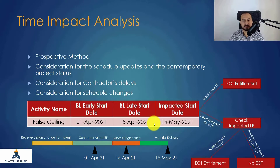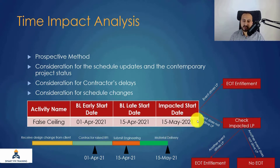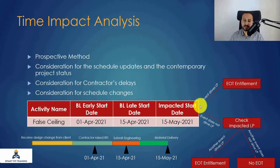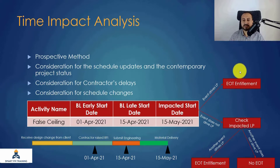For the schedule update, we have to check a logic loop. After inserting the event into the schedule update, we check the longest path. If this event is driving the longest path, there will be EOT entitlement.